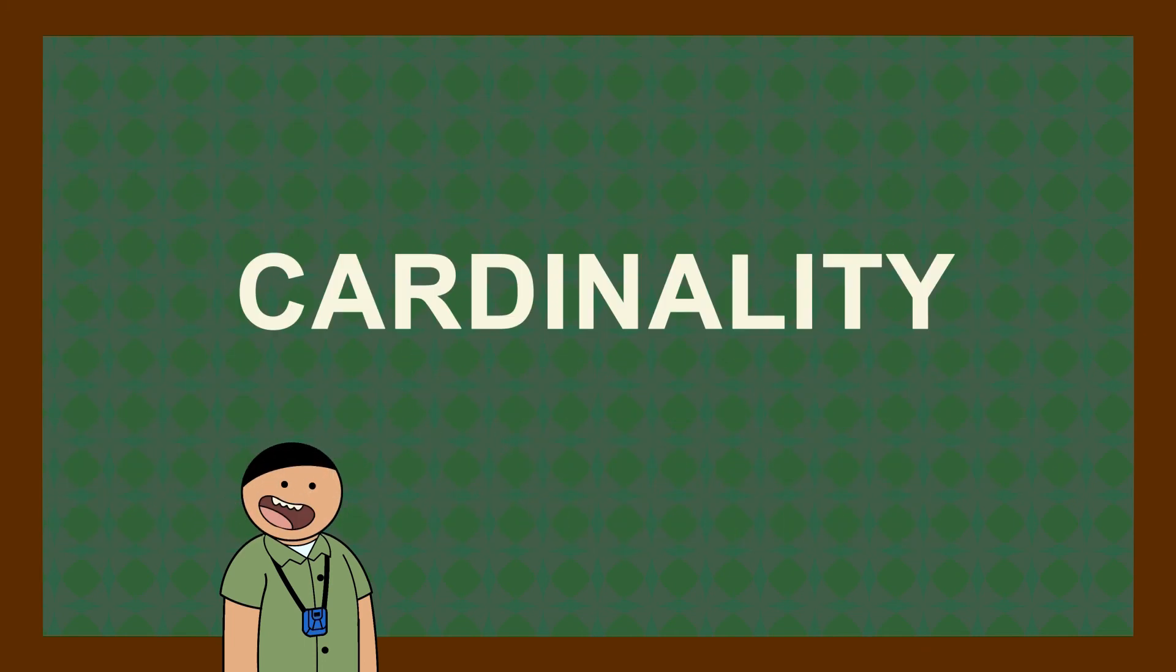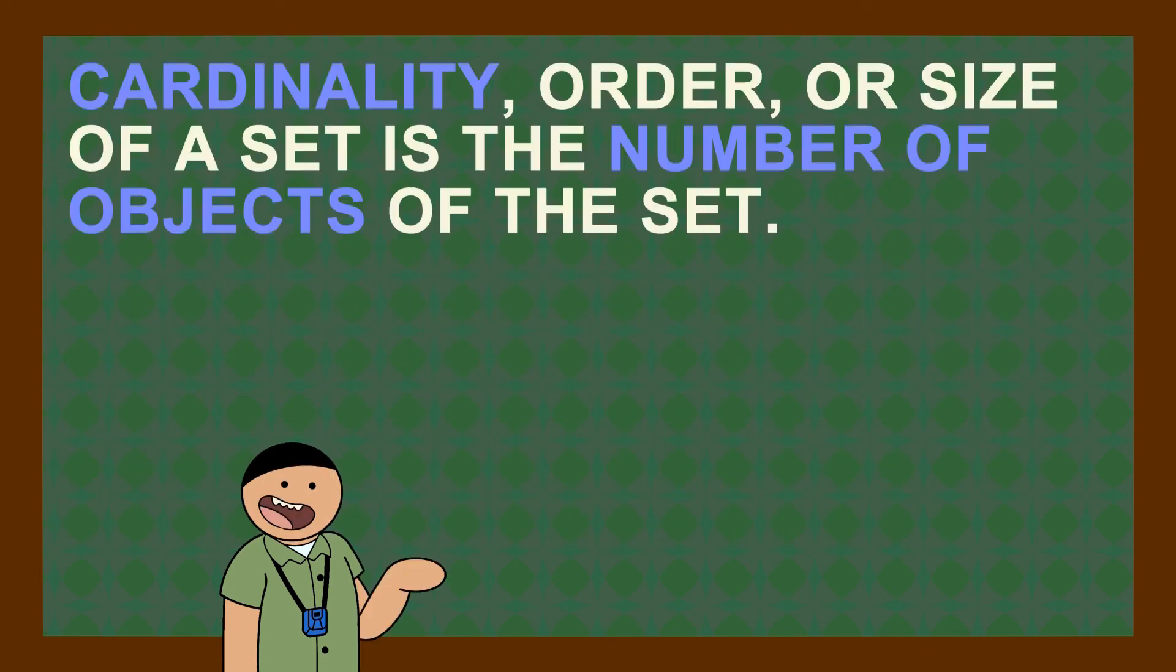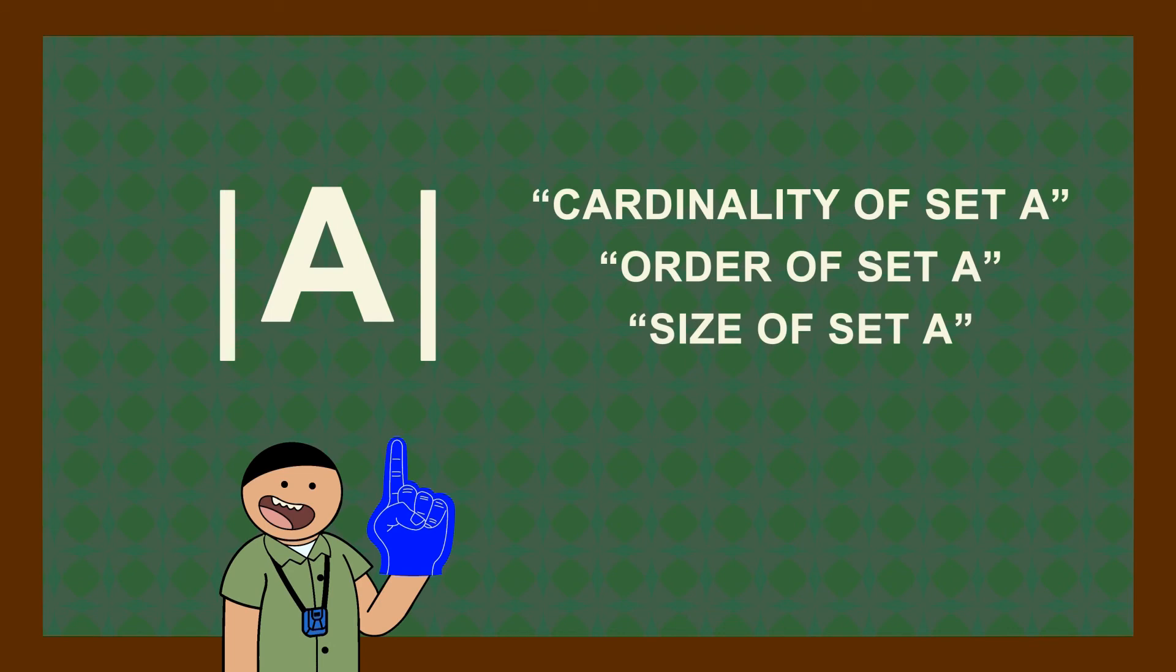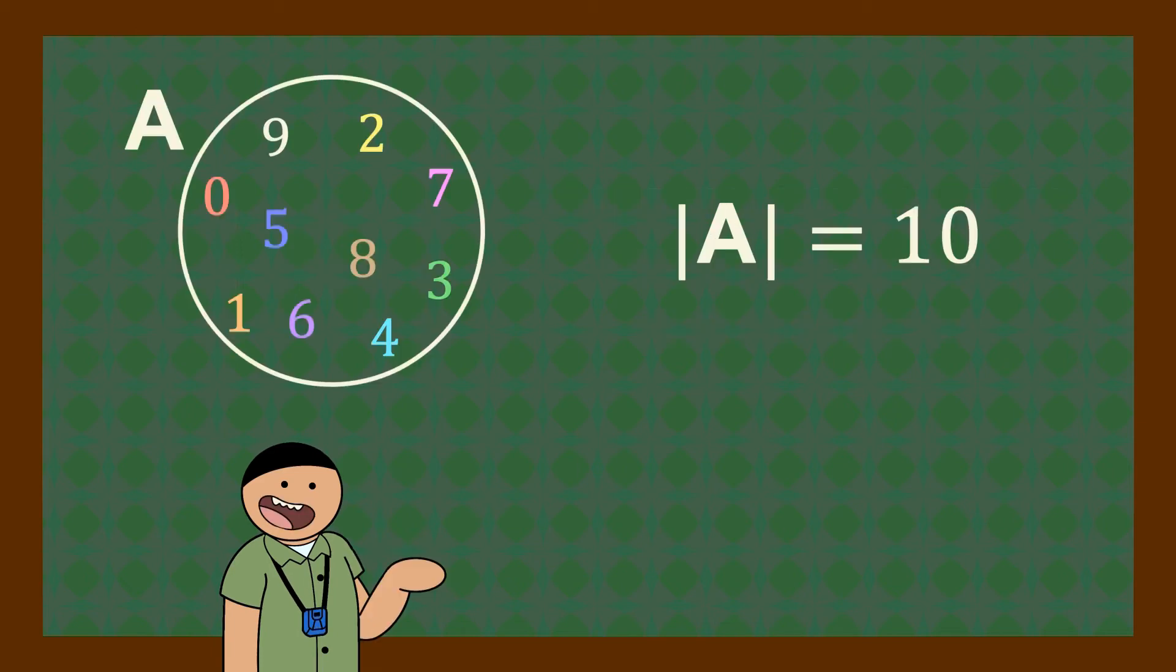Now let's talk about cardinality. Cardinality, order, or size of the set is the number of objects of the set. This symbol means cardinality of set A or order of set A or size of set A. Let's cite some examples. Cardinality of set A is 10 and cardinality of set B is 3.